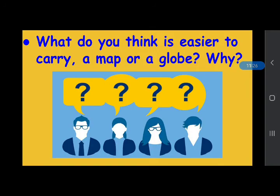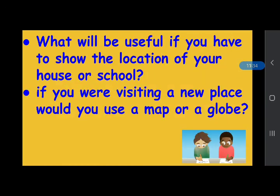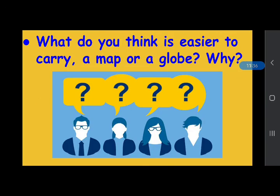The next question: what do you think is easier to carry — a map or a globe, and why? Both maps and globes help to locate different places on the earth — that is the similarity. But because a map is easy to carry as it is in the form of an atlas or a sheet of paper, a map is easier to carry because it can be folded and is on a flat surface, unlike a globe.